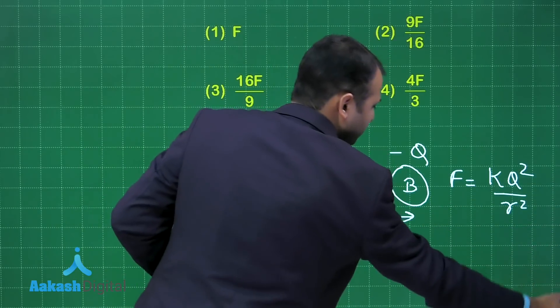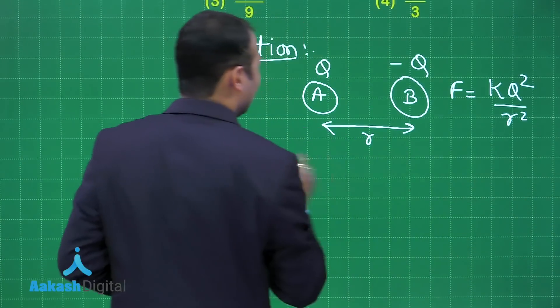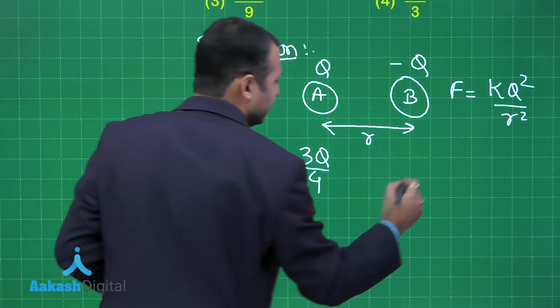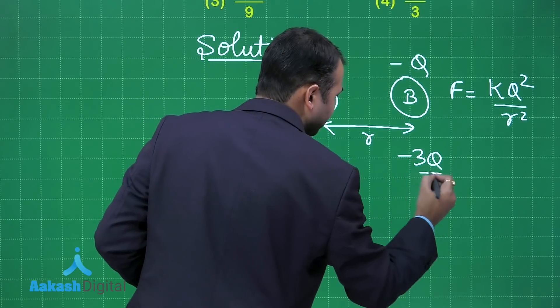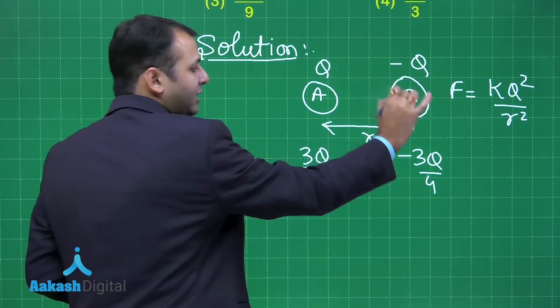Now if I transfer 25% charge of A to B, in that case the final charge A will be 3Q by 4 and here it will be minus 3Q by 4. Right. Because I have taken out Q by 4 from here and added it here.